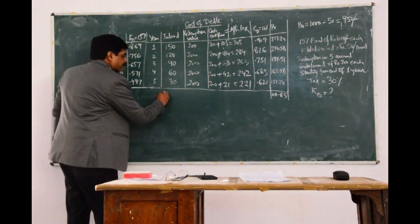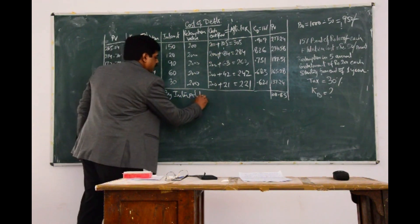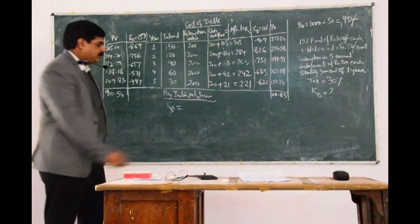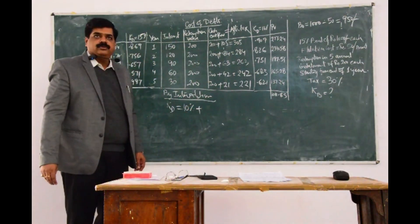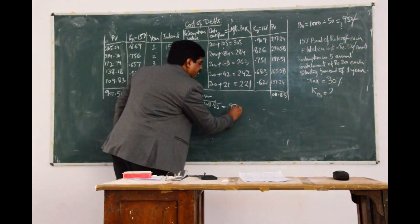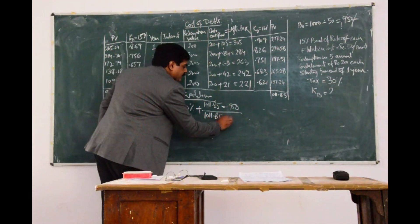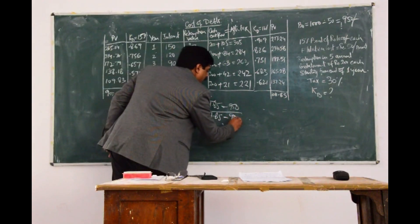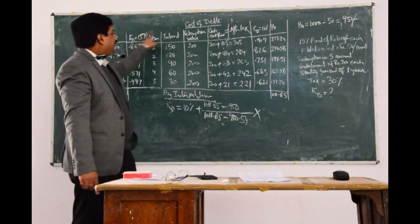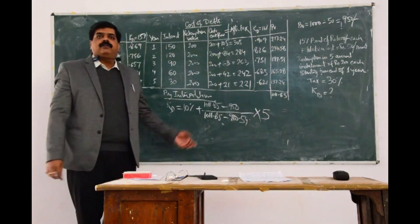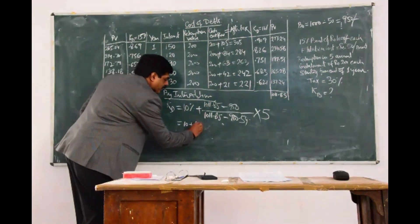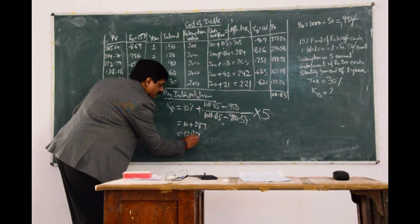We apply interpolation. KD (after tax) = 10% + [(1011.85 − 950) / (1011.85 − 900.54)] × (15 − 10). When we calculate this: 10 + 2.87 = 12.87%. This is the exact value of KD after tax.